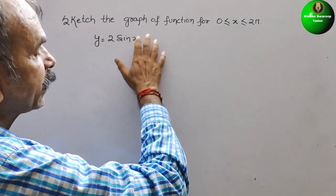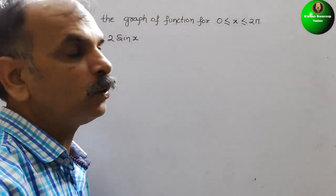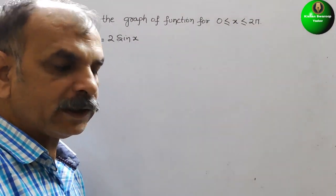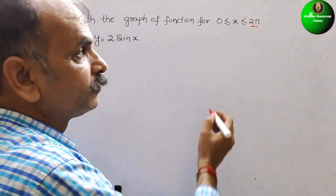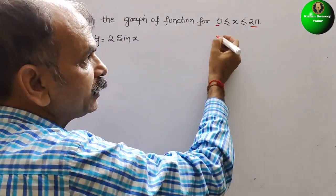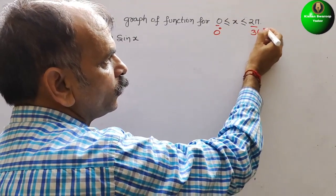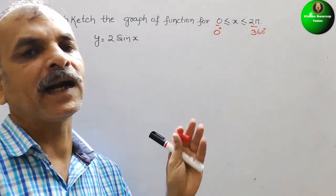Your question is, sketch the graph of function for 0 less than or equal to x less than or equal to 2π. So just understand this. They have given this in radians. So that means this is equal to 0 degrees and 2π is your 360 degrees. So between 0 to 360 degrees, we have to make the graph.